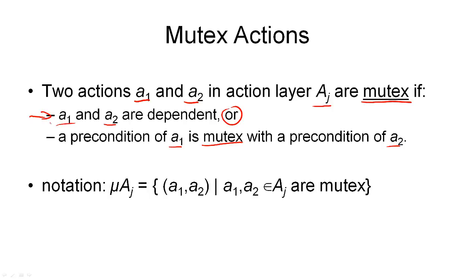Note that the first condition — dependency — is problem independent, so it does not need to be recomputed for each action layer AJ; it's always the same. Whereas the second condition does depend on the action layer, because we refer to preconditions which are propositions in the preceding proposition layer. I introduce the set mu_AJ, which we've already used in the previous algorithm: it is the set of all pairs (A1, A2) in action layer AJ that are mutex. In the example we just looked at, action layer A2 had 24 mutex pairs of actions. This relation is symmetric — if A1 is mutex to A2, then A2 is also mutex to A1, and the same goes for propositions.